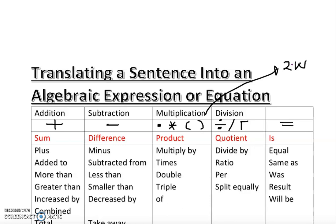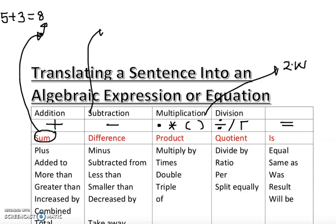Let's find out when we use each term. The sum: 5 plus 3 equals 8 — that result is called the sum. When you add two or more numbers, the answer you get is called the sum. For subtraction: 5 minus 3 equals 2 — that answer is called the difference. The answer you get after subtracting is called the difference.